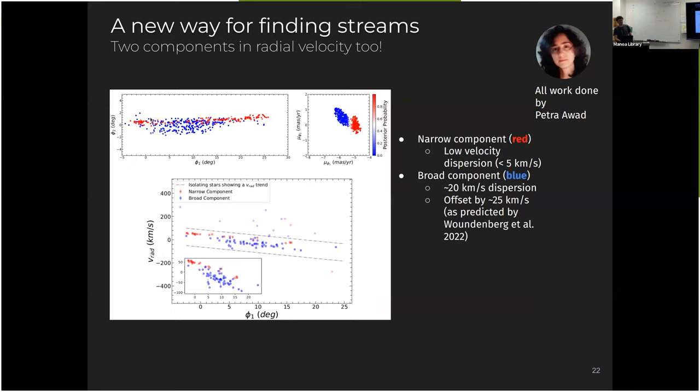And what we found is that if you isolate these two clumps, one clump makes the narrow component, so the red dots here, and the blue clump forms the broad component. So they are offset in proper motion.